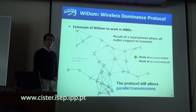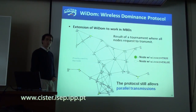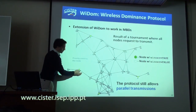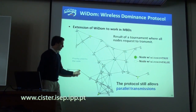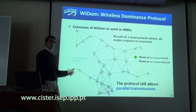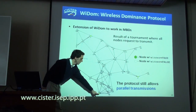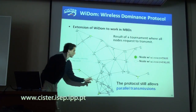In this case, node 8 cannot hear what node 12 is saying, and node 27 cannot hear what node 9 is saying — that's the two-hop distance. This node will transmit to this one, so no nodes within the two-hop distance can transmit at the same time as this node. But this node can, because it is not in the two-hop neighborhood of that one.